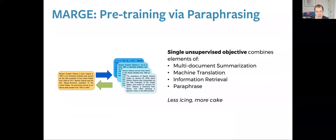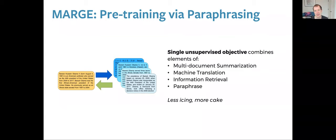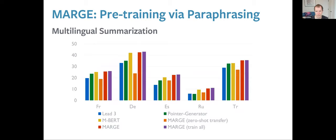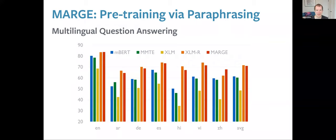This is a single unsupervised pre-training objective that actually looks a lot like many end tasks we care about. Things like RoBERTa and BERT don't really look like any tasks we care about, whereas this objective captures multi-document summarization, machine translation (because retrieval can be in different languages), information retrieval, and paraphrasing more generally. The idea is to build a pre-training task that looks like tasks we care about, so we can get away with less supervised data for fine-tuning. MARGE performs very progressively against other models on retrieval tasks, state-of-the-art results on text summarization in many languages, and works well for question answering and paraphrase detection.